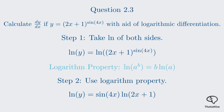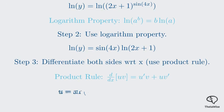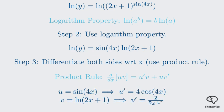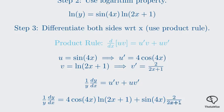Now we differentiate both sides with respect to x. The derivative of ln y is 1 over y times dy/dx, using the chain rule on the left side. For the right side, we use the product rule. Let u equal sin 4x and v equal ln of 2x plus 1. Then u prime equals 4 cos 4x, and v prime equals 2 over 2x plus 1. Applying the product rule, the right side becomes 4 cos 4x times ln of 2x plus 1, plus sin 4x times 2 over 2x plus 1.